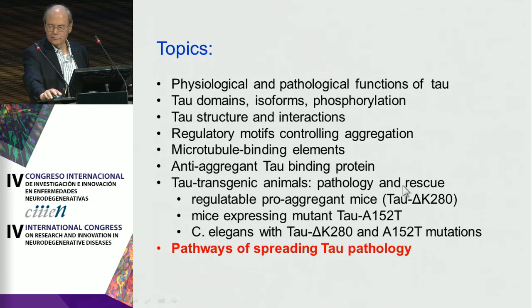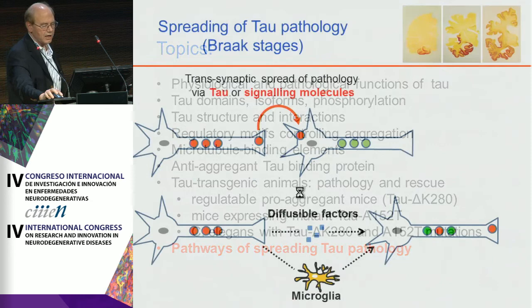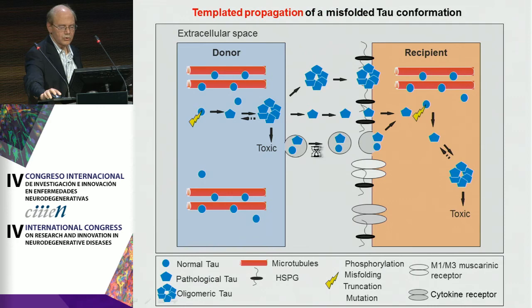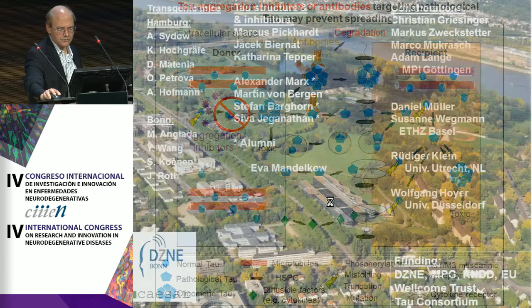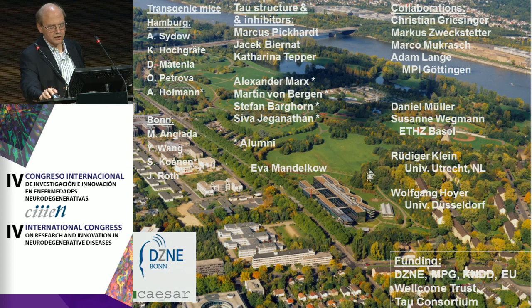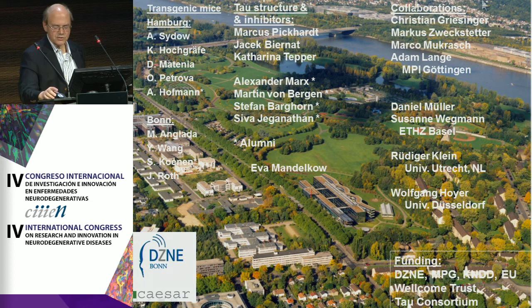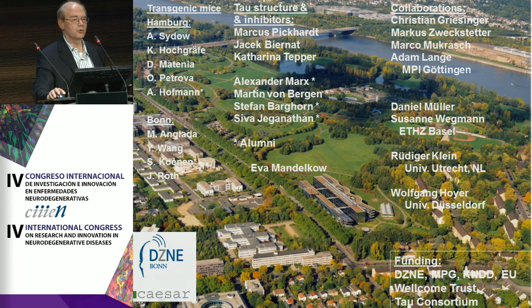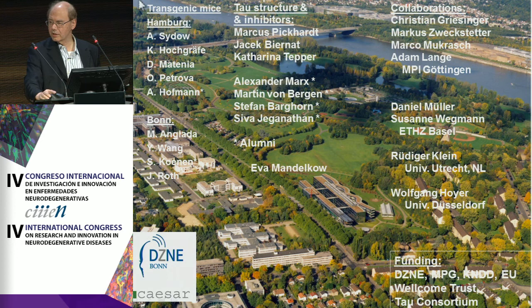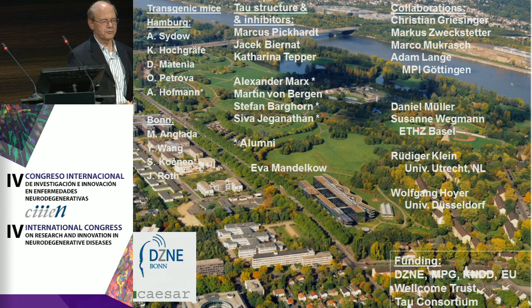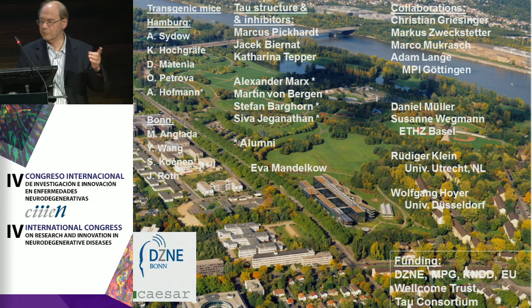There are many different mechanisms of tau spreading, which is a very complicated field. This is the team at the German Center for Neurodegenerative Diseases and the DZNE institute in Bonn, which is in the process of moving to a new building at the medical school of Bonn University. Germany's president Joachim Gauck recently visited and said we should find a drug before he gets really old. Thank you very much for your attention.